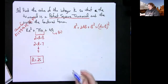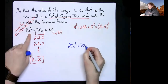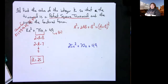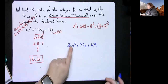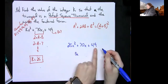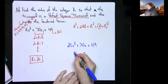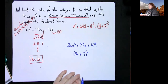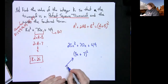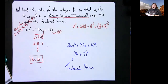Now I know my trinomial is 25x squared plus 70x plus 49. I can recognize this as a perfect square trinomial. Take the square root of 25x squared, which is 5x, take the square root of 49, which is 7, keep the first sign, and write it as quantity squared: (5x + 7) squared. That is the factored form.